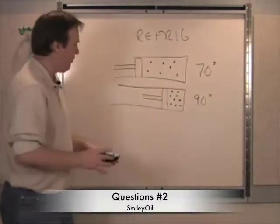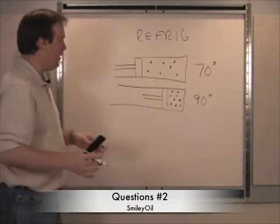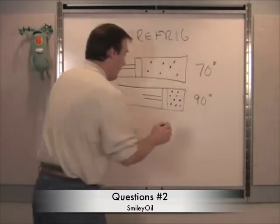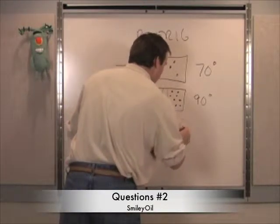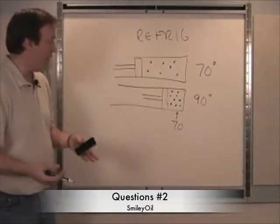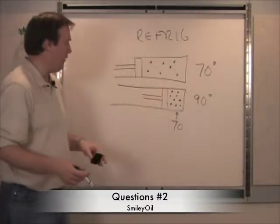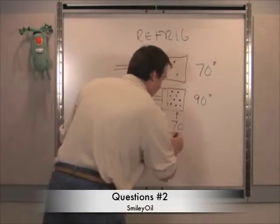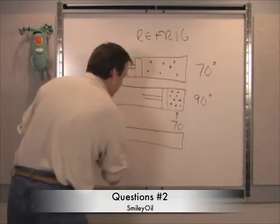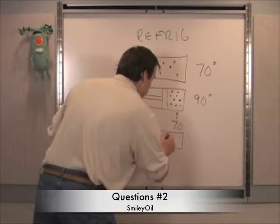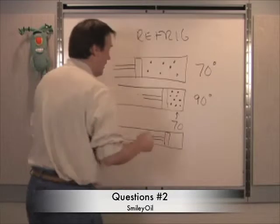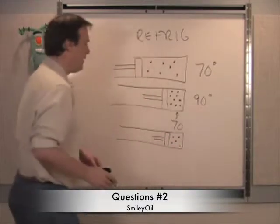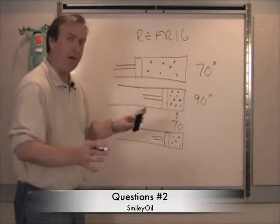So now we do the third step: we blow 70 degree air over the 90 degree vessel, 90 degree tube. That's the third step. And then that process, that 90 degree process, reduces the activity so it slows down to something more like this, less banging around of the atoms.